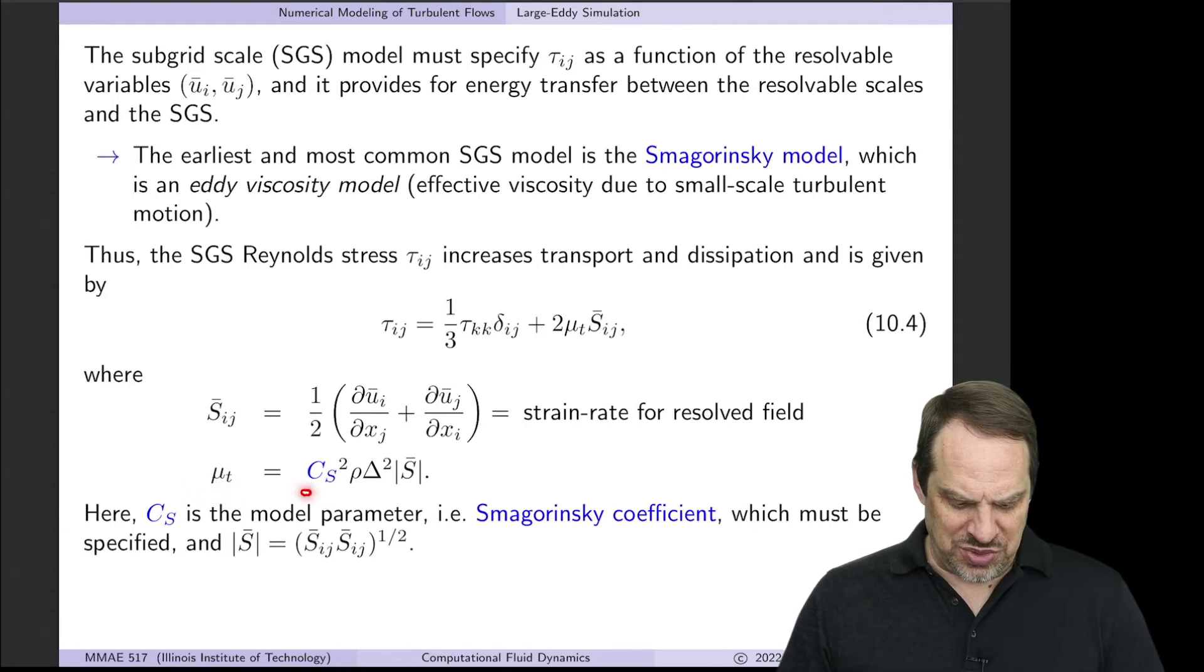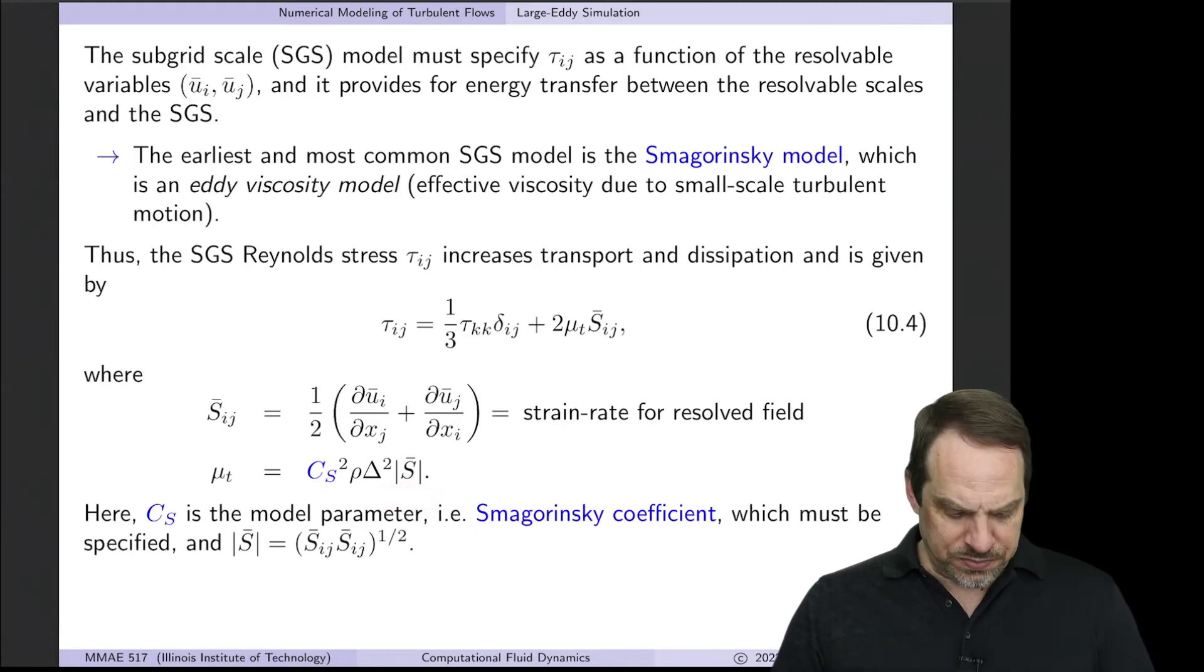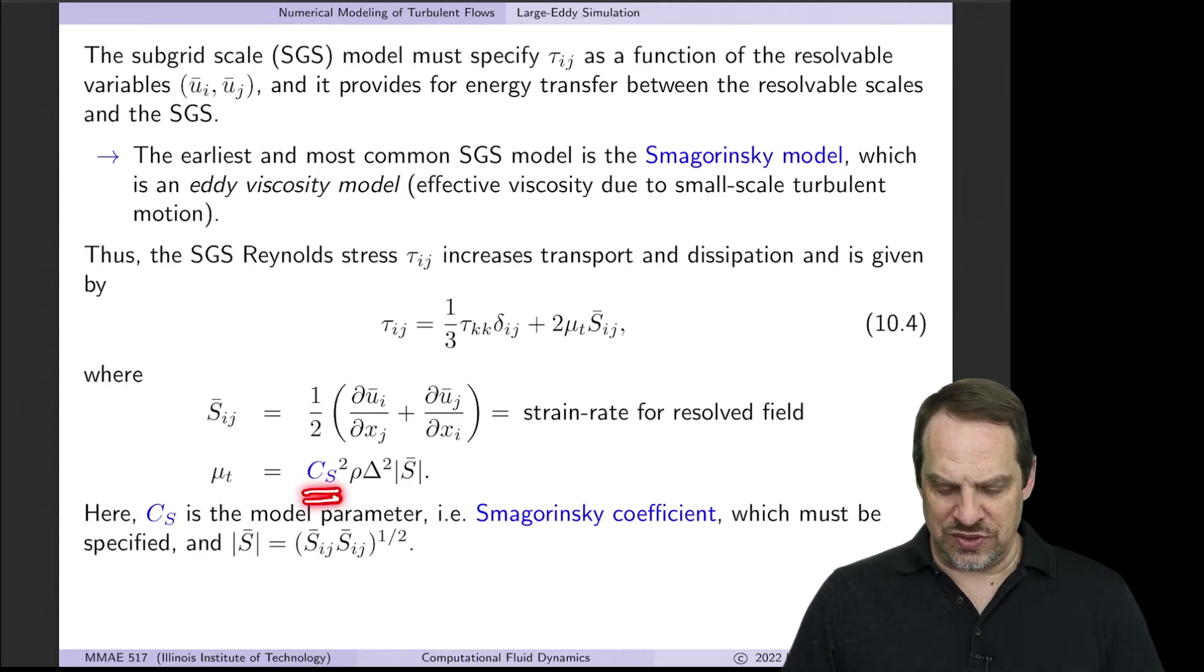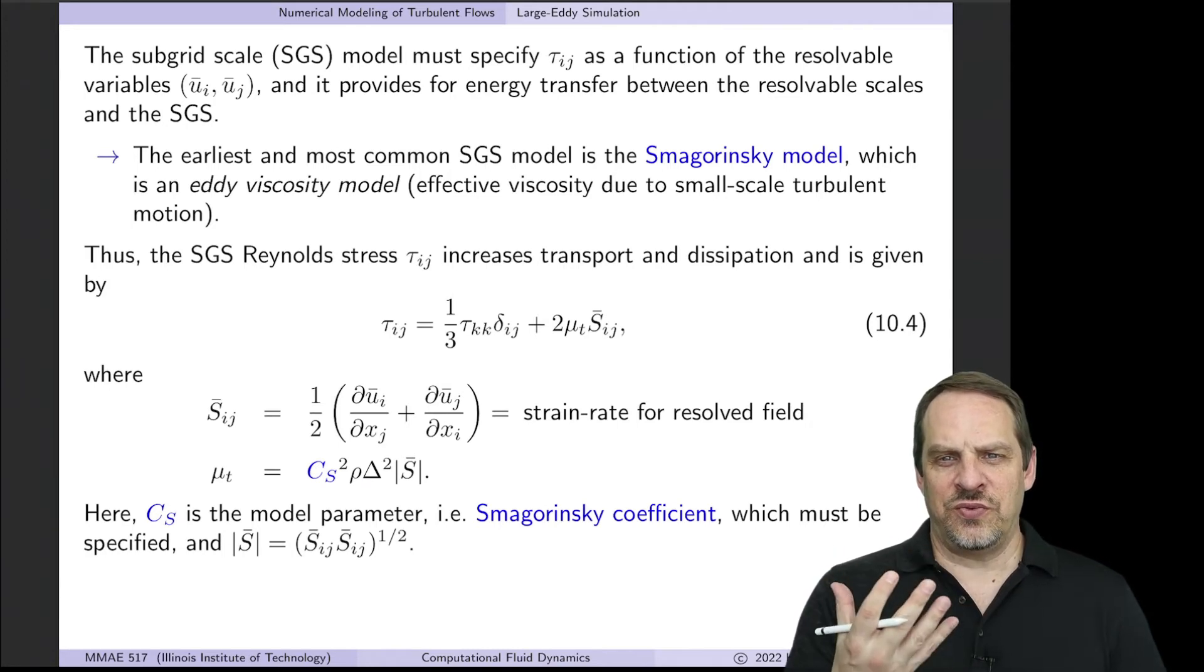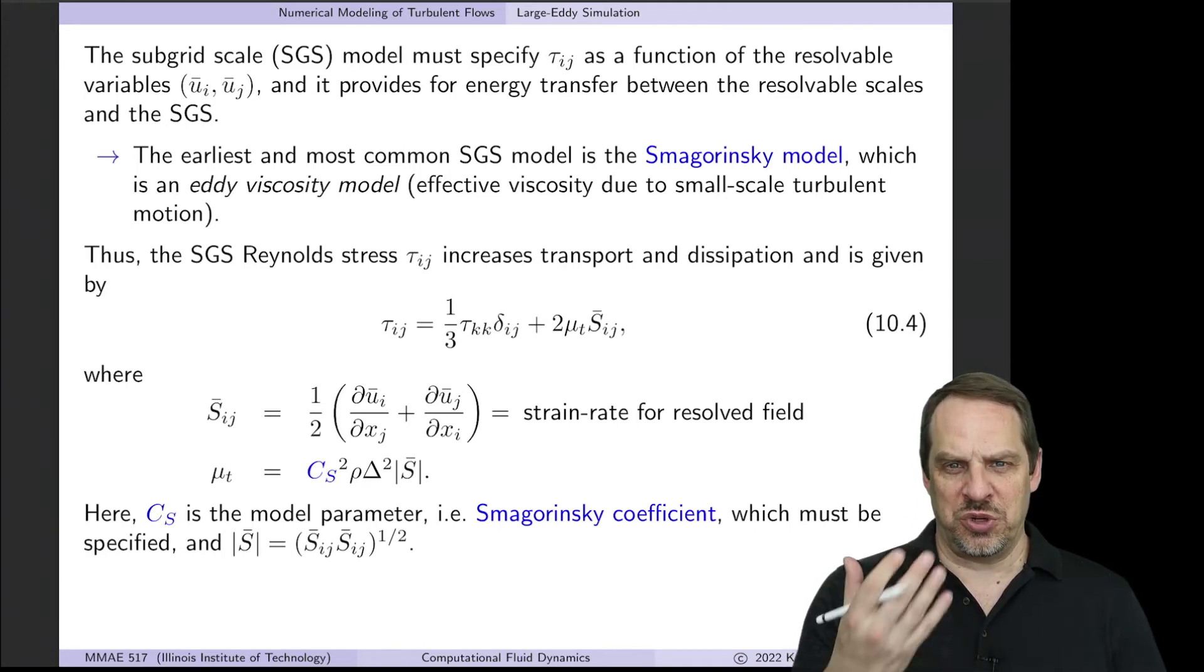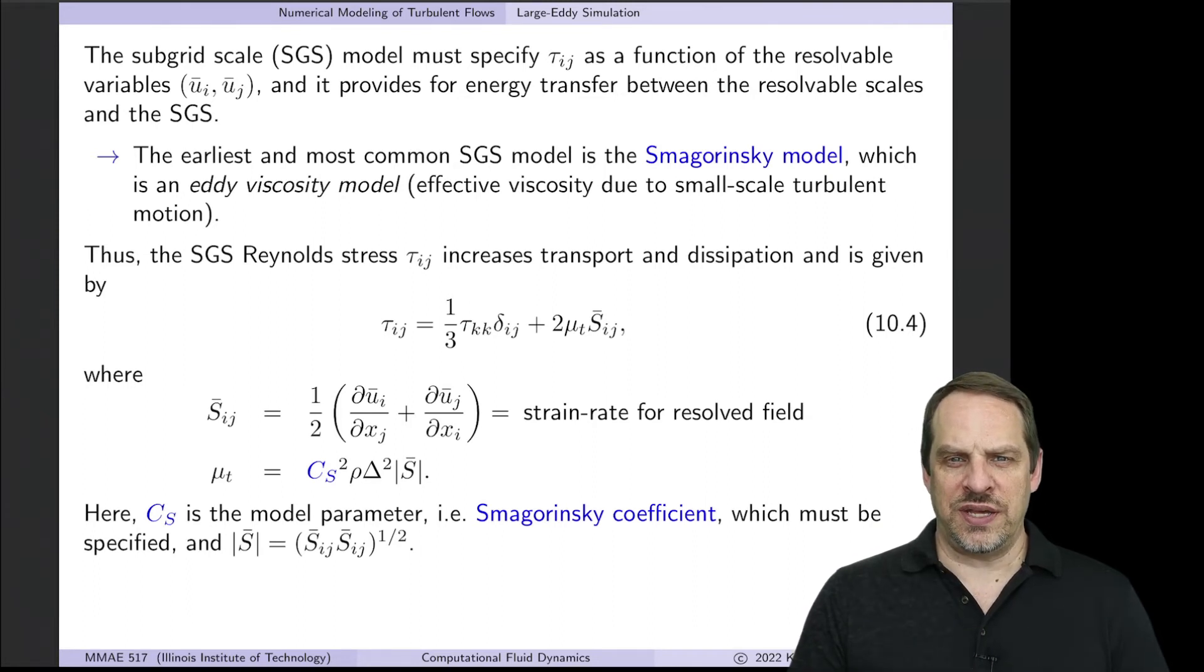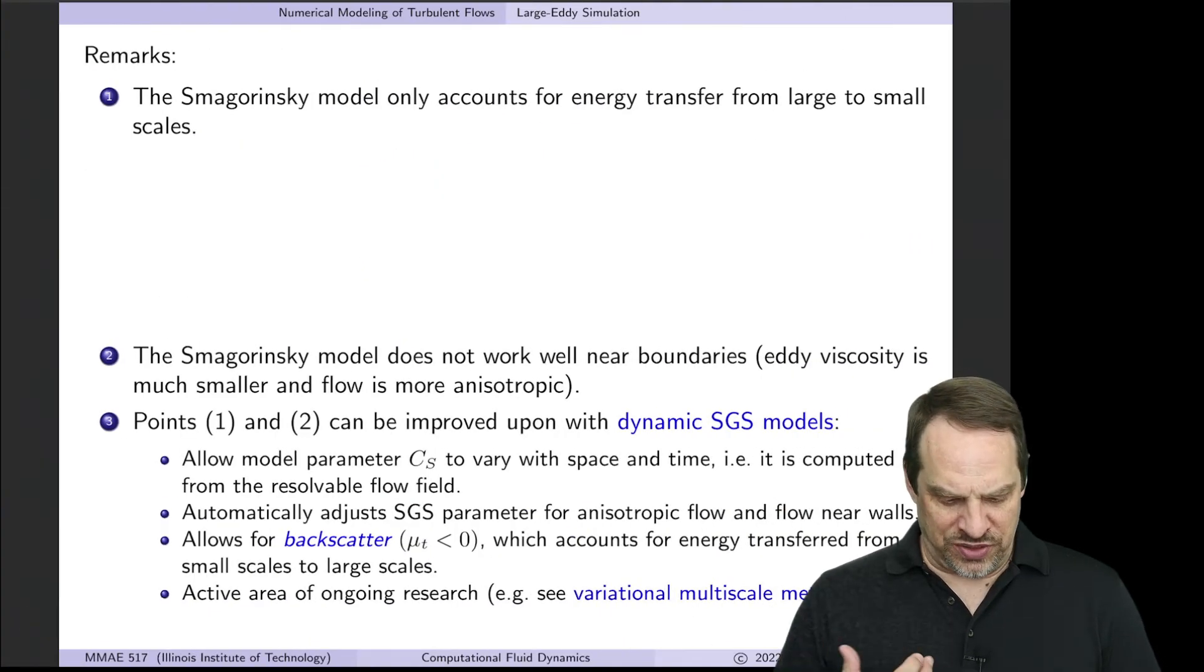In the Smagorinsky approach, C_s, the Smagorinsky coefficient, is just a constant—a number we would get from actual flows, whether from DNS or experimental flows, to estimate C_s for particular types or classes of flows we're interested in.